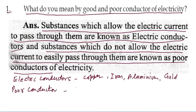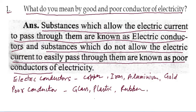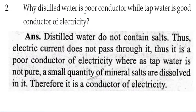Poor conductors include glass, plastic, and rubber. These are the poor conductors. Now come to the next question.